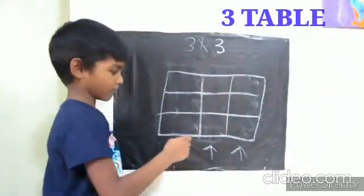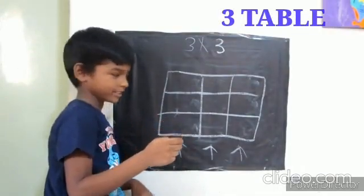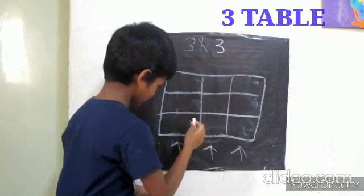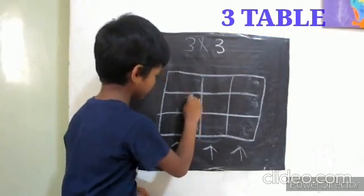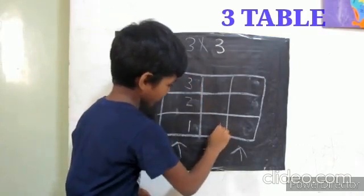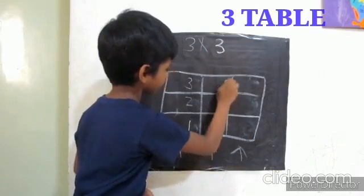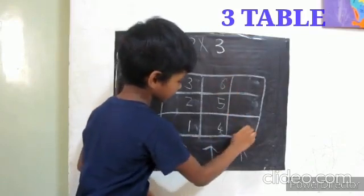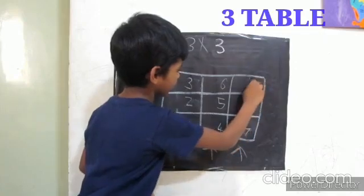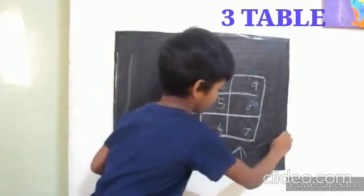We have 1, 2, 3 that 3 table is easy. We have 1, 2, 3, 4, 5, 6, 7, 8, 9, for 10 table we have to put 0 alone.